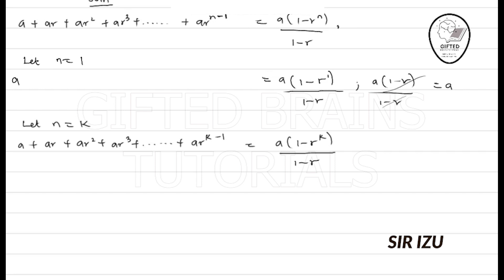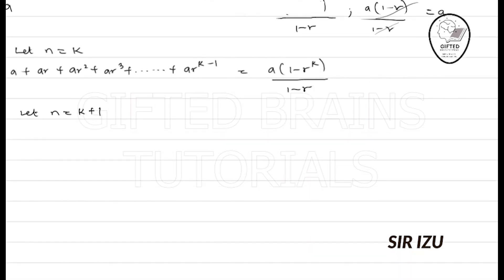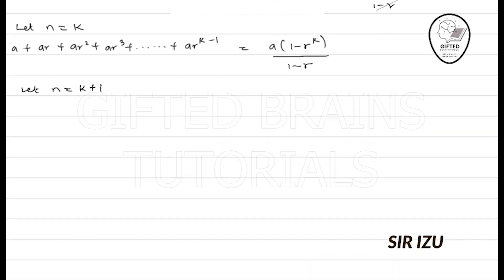And finally, we'll go to step 3. Let n be equal to k plus 1. So if we have this, what we'll just simply do is to say we'll have A plus, on the left-hand side, AR plus AR squared plus AR cubed plus AR to the k minus 1. Then the last step, obviously, will be, because you add 1 to the power, so that will be AR. If you add 1 to k minus 1, you will have just k.